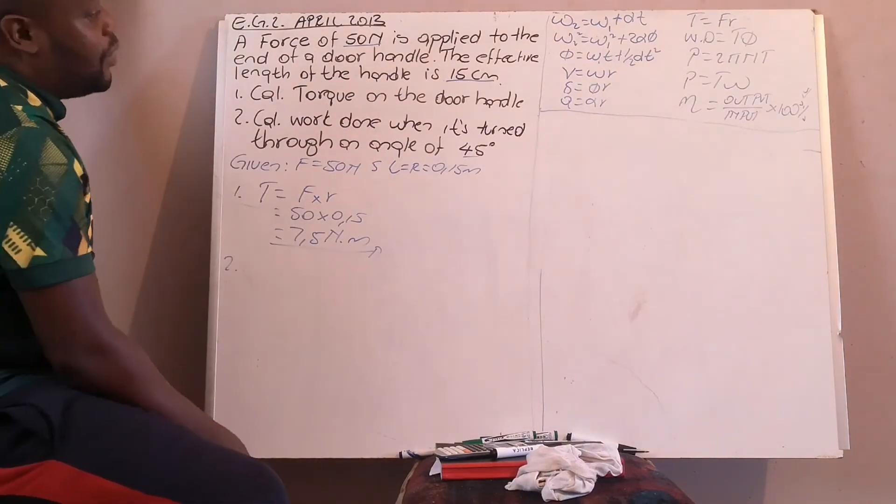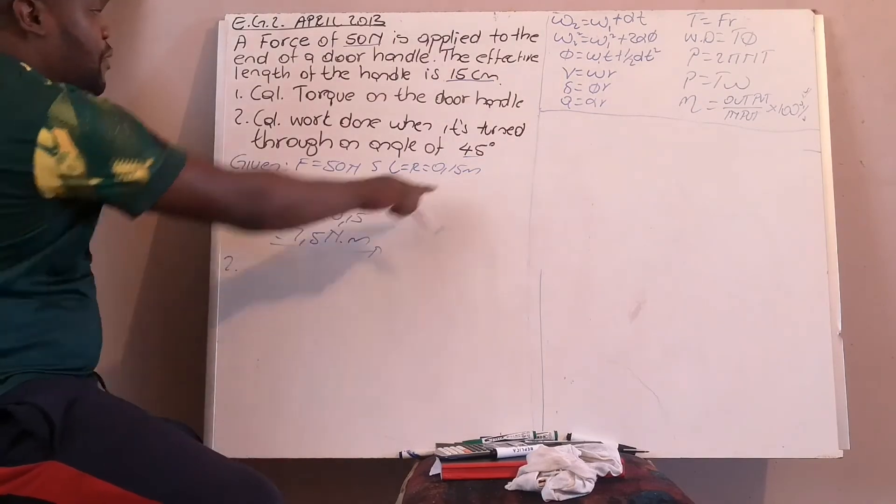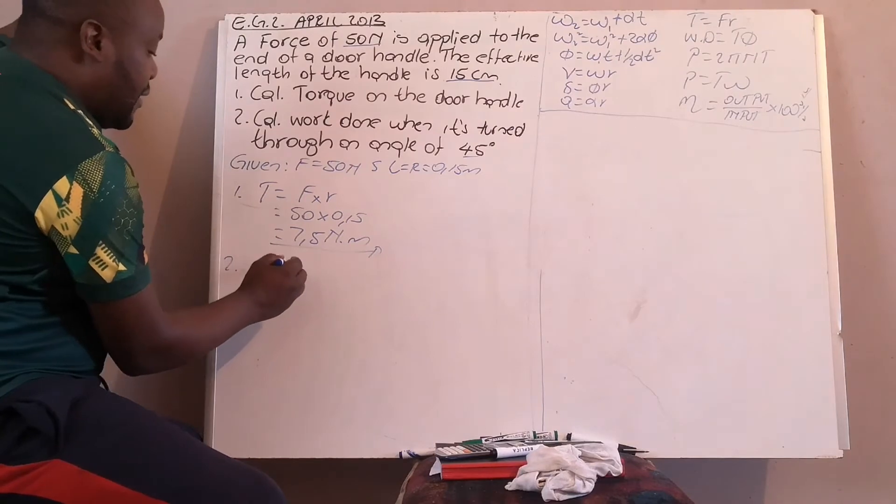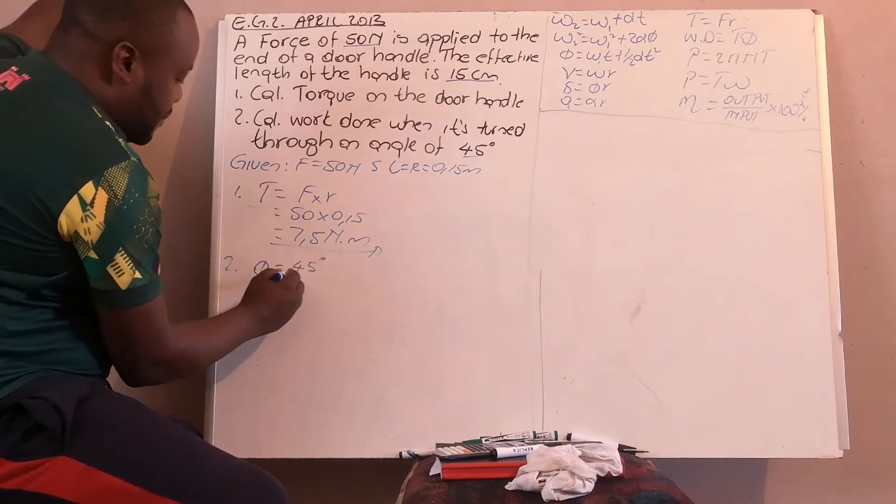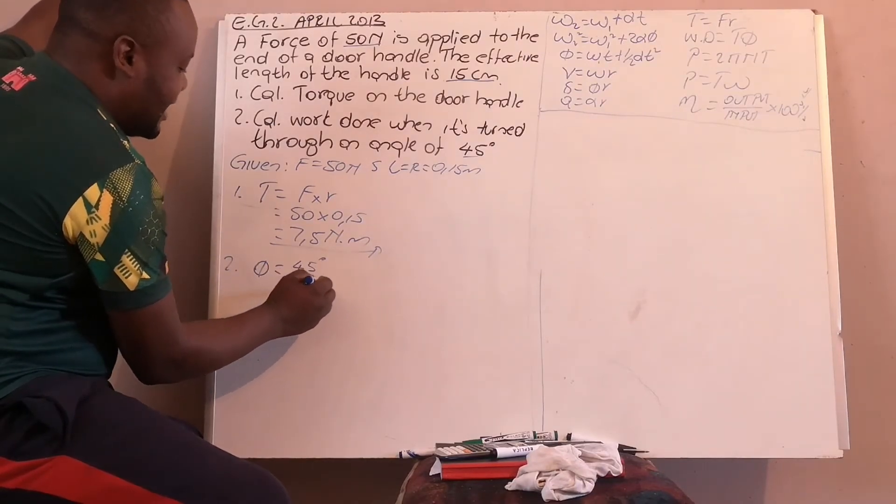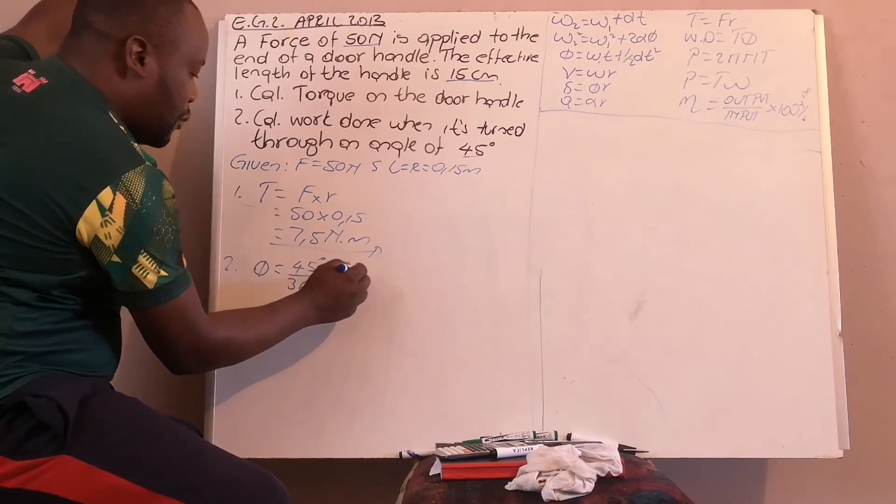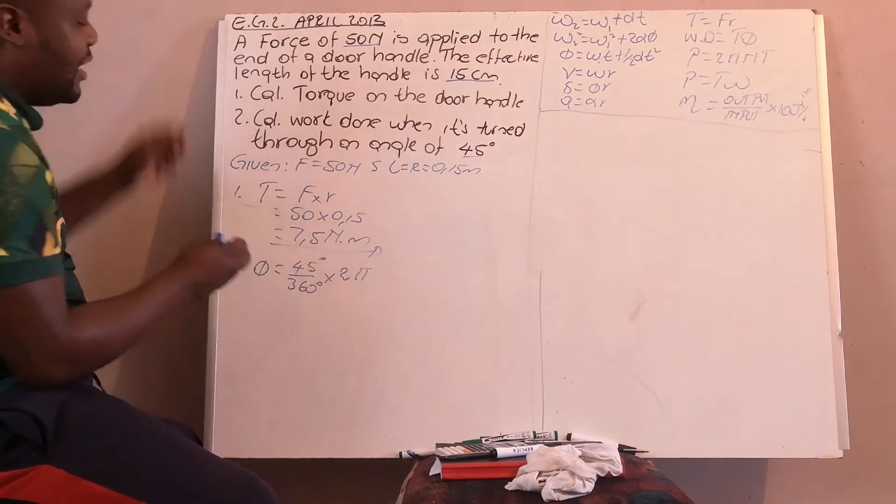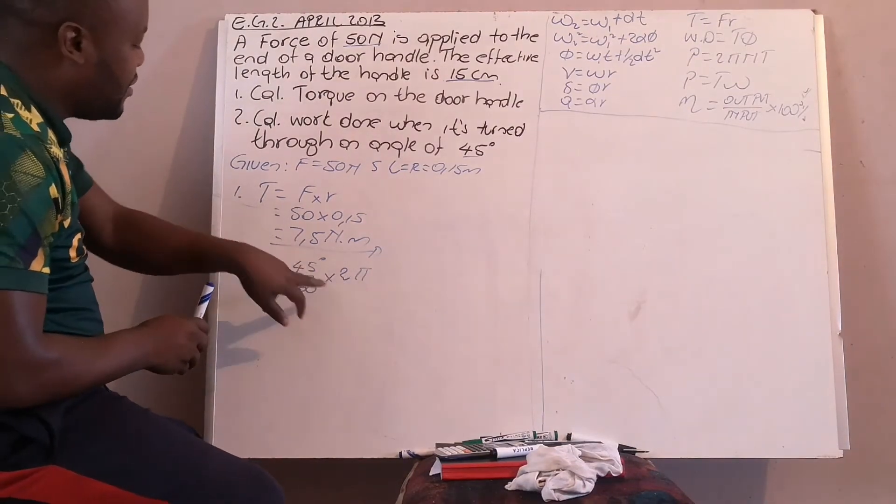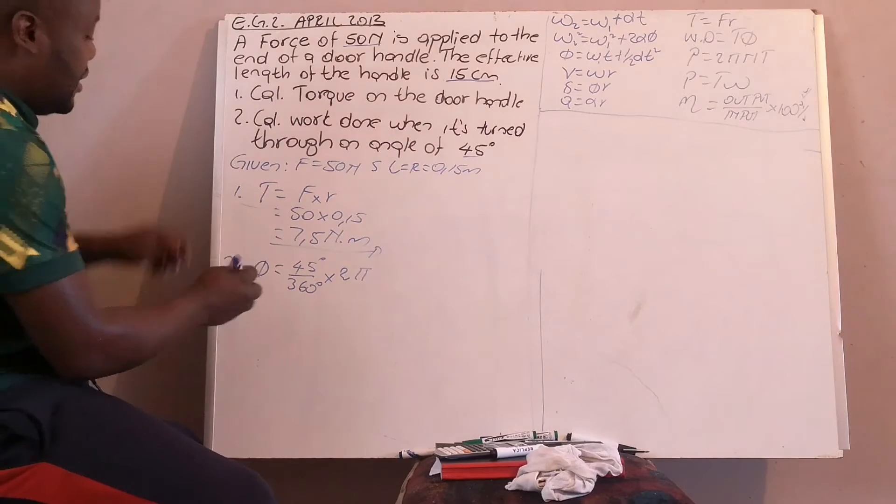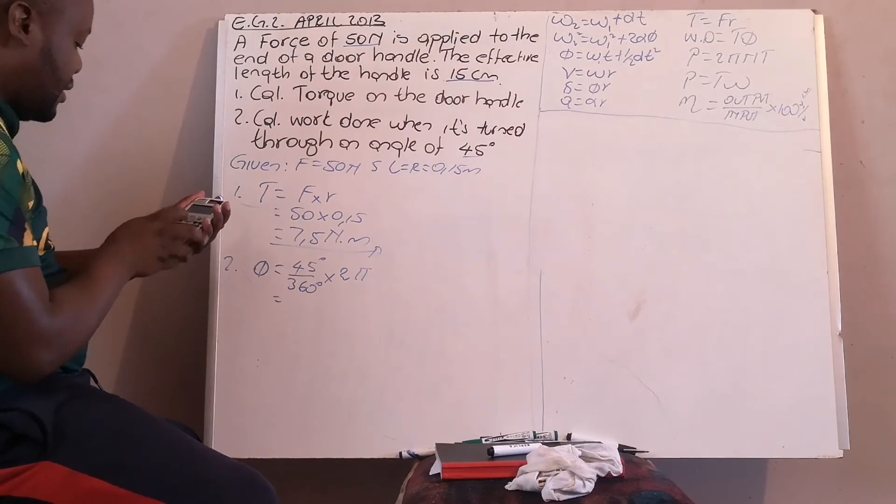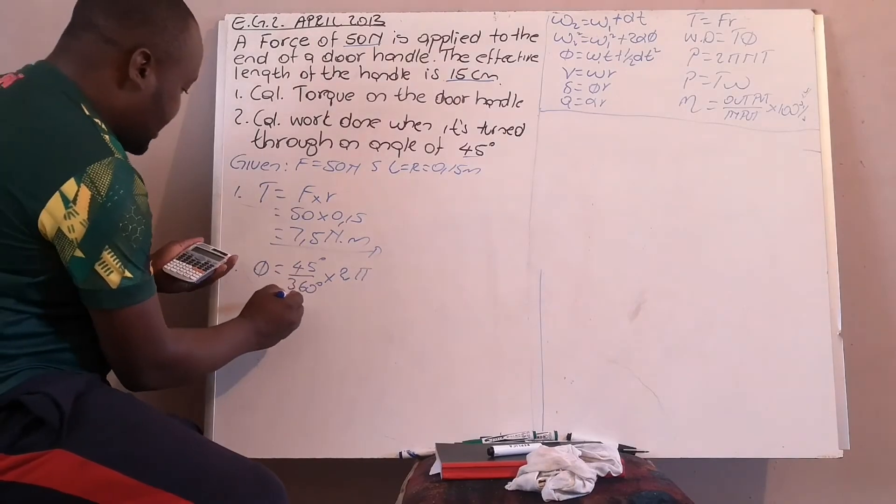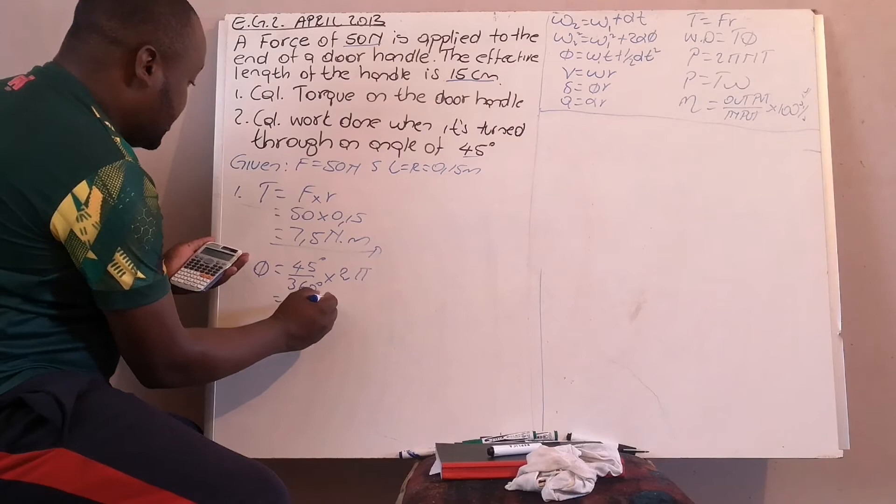Now, how can you get your angular displacement? You have your angle, so your angular displacement will be 45 degrees changed to radians. It will be 45 divided by 360 degrees multiplied by 2 pi. So 45 over 360 gives you revolutions, multiplied by 2 pi changes your revolutions to radians. You will have 45 multiplied by 2 pi divided by 360. Your radians is 0.785.